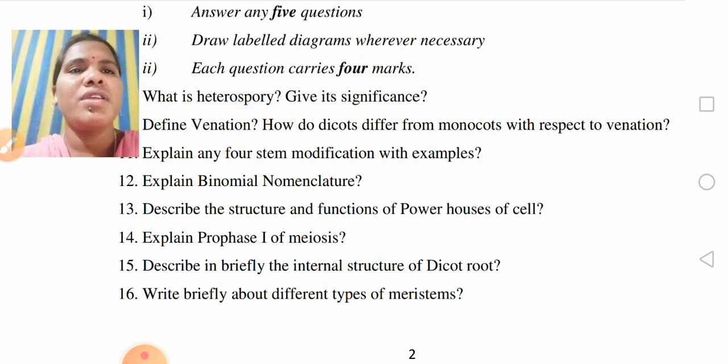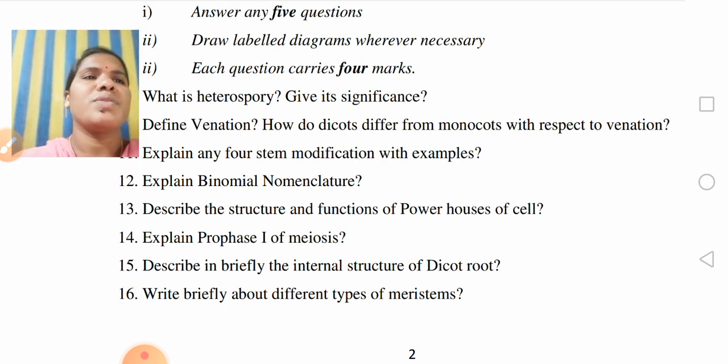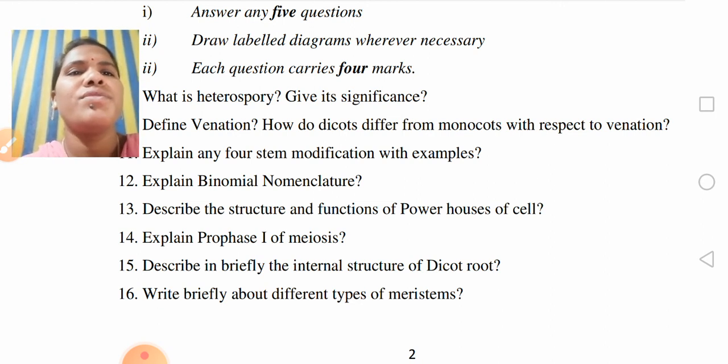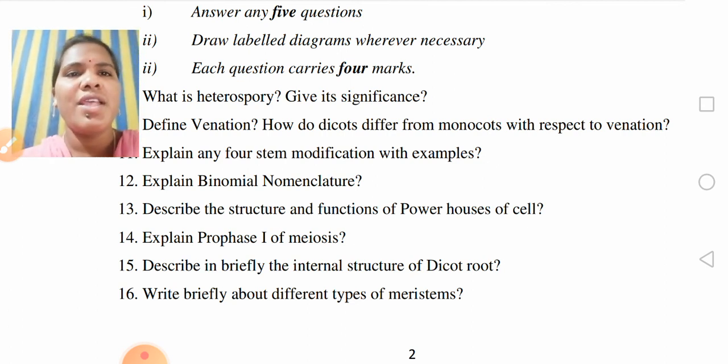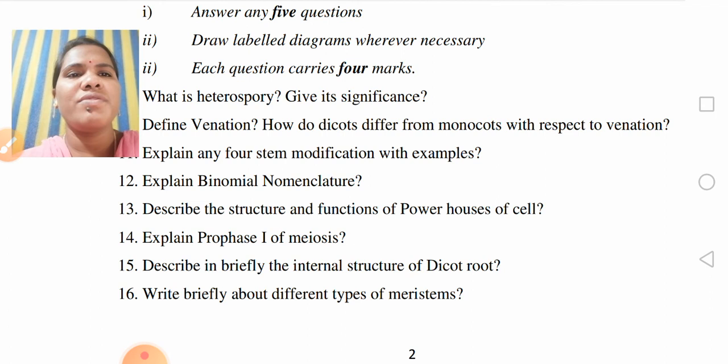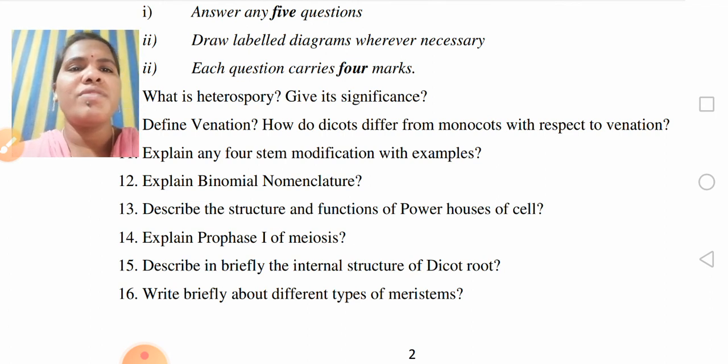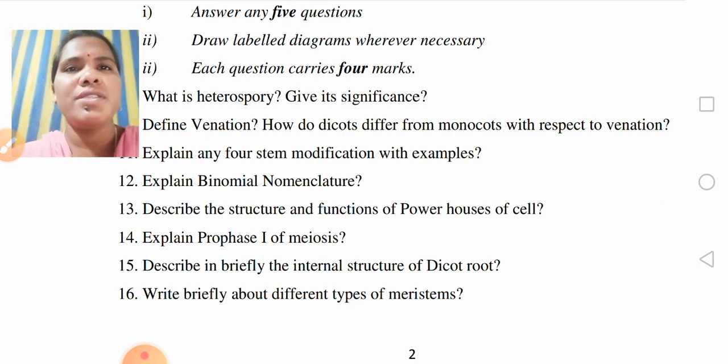What is heterospory? Give its significance. Define venation. How do dicots differ from monocots with respect to venation? Explain any four stem modifications with examples. Explain binomial nomenclature. Describe the structure and functions of the powerhouses of the cell. Explain prophase 1 of meiosis. Describe briefly the internal structure of dicot root. Write briefly about the different types of meristems.